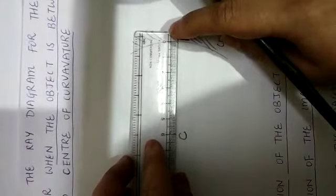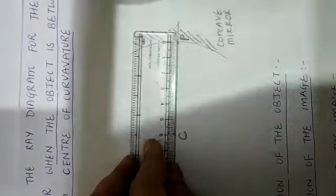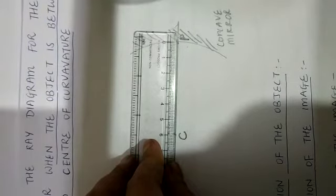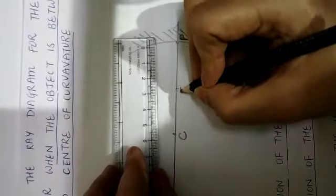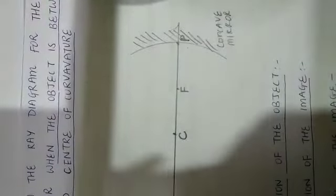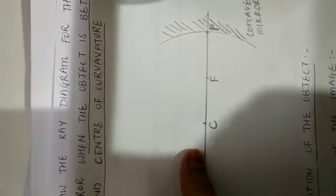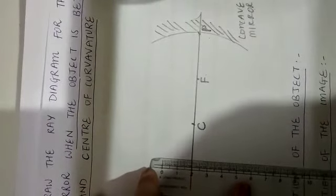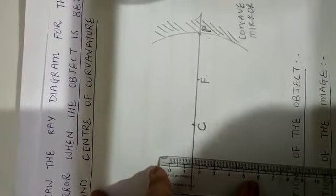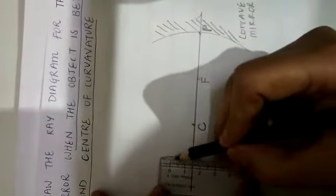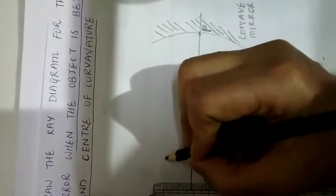Exactly at the middle between C and P, my point F — principal focus — will be there. Since the distance between P and C is 6 cm, at 3 cm I will take my point F, the principal focus. The object position is between infinity and center of curvature, so we will draw our object beyond center of curvature. We name the object AB, and I am taking the object height as 1.5 cm.